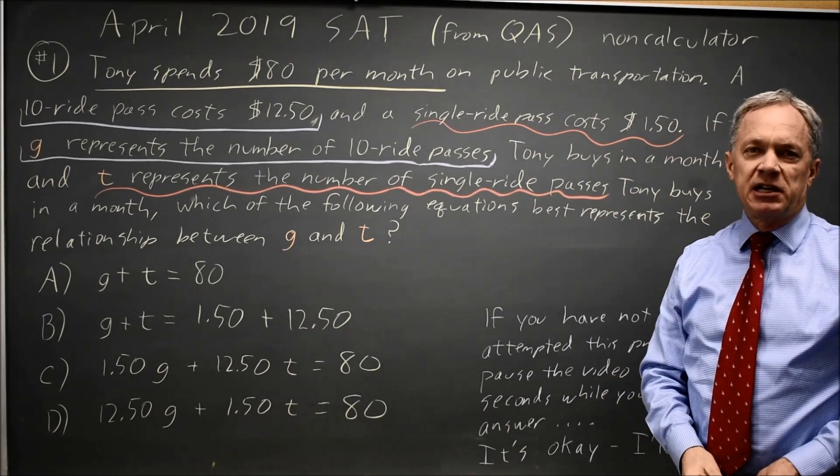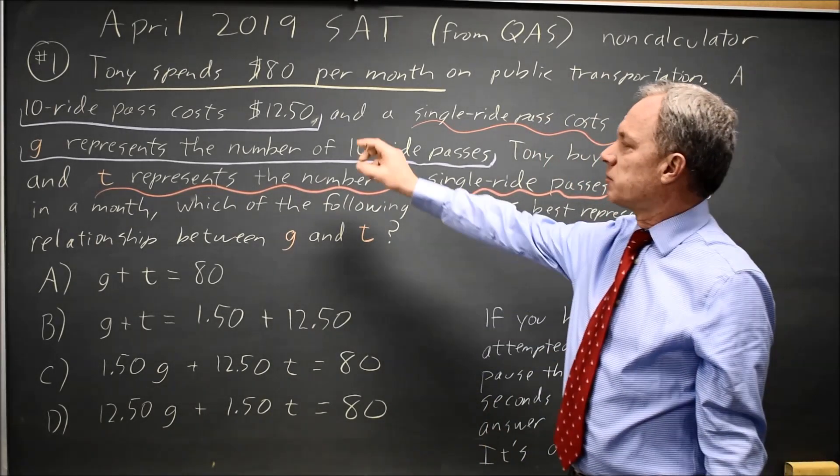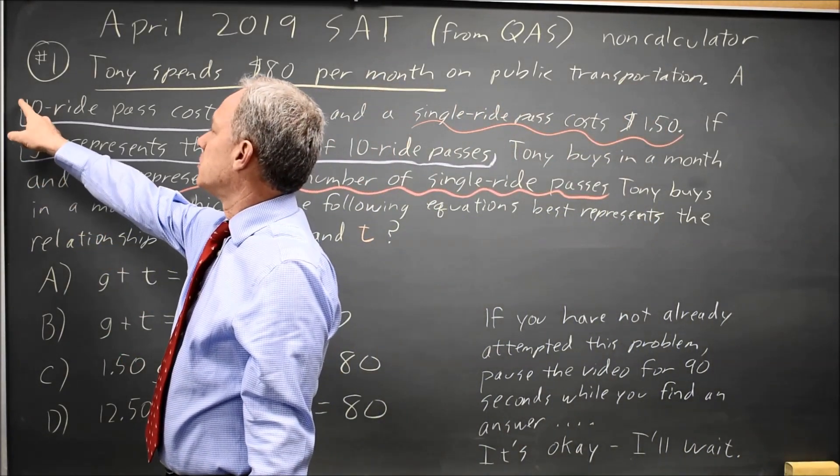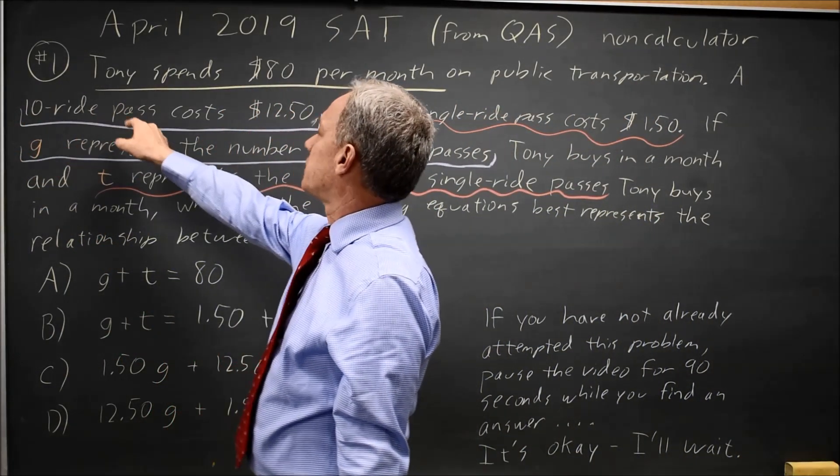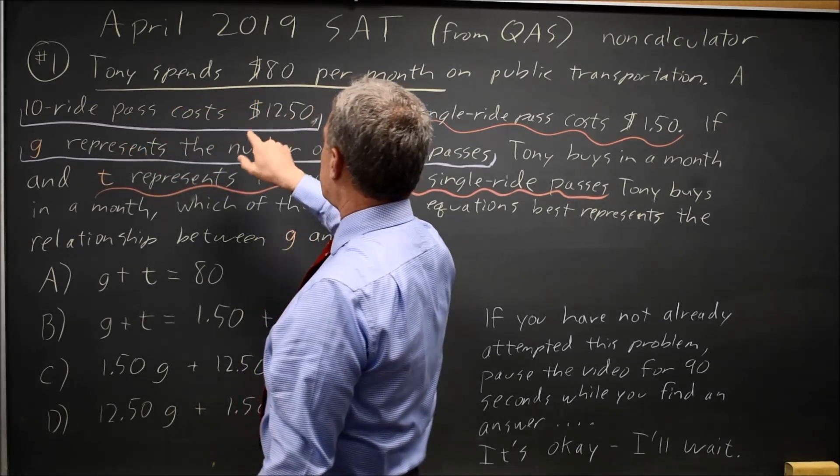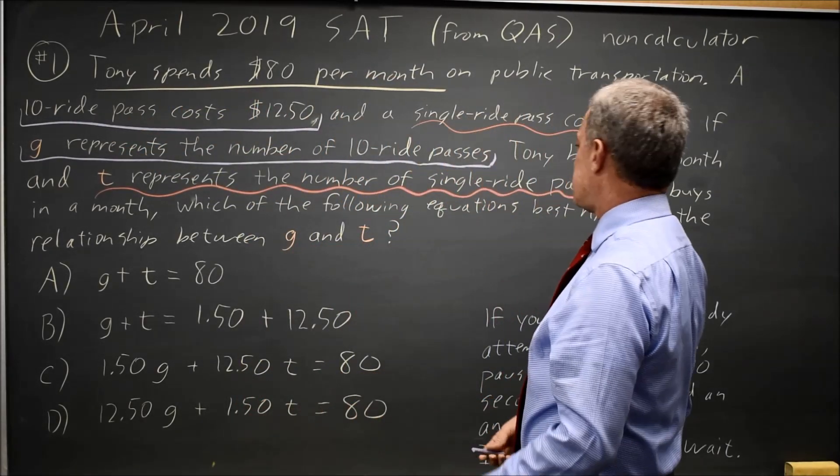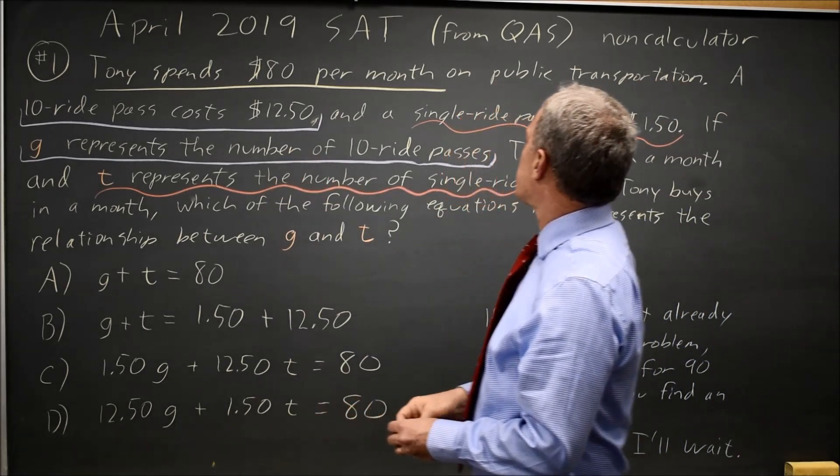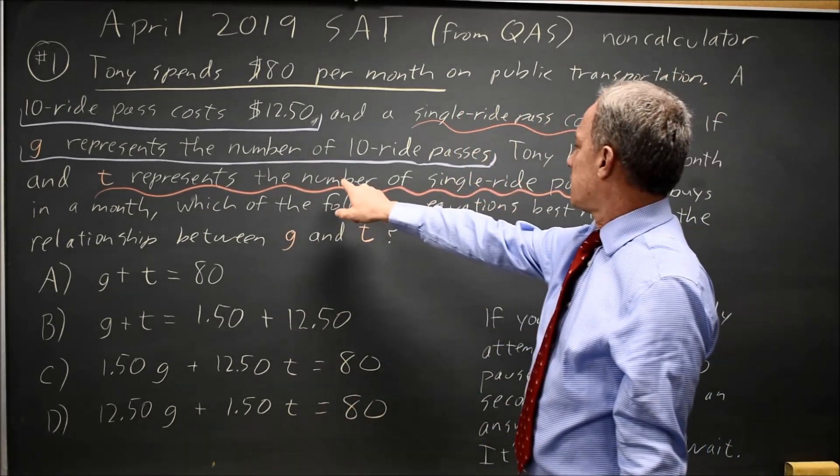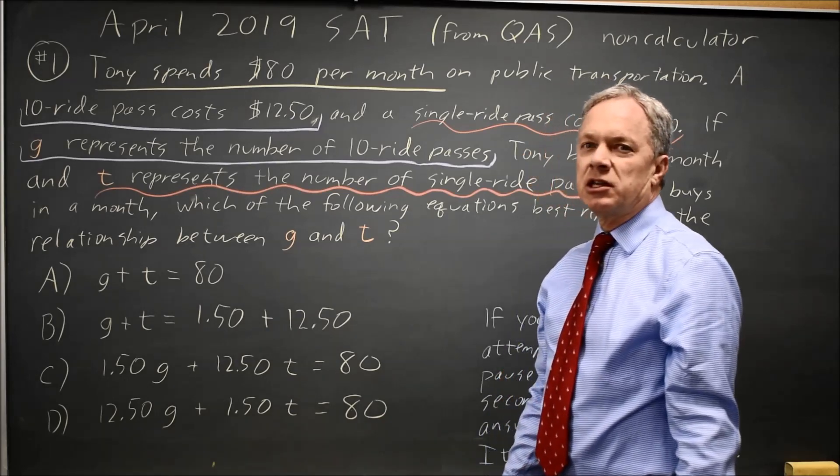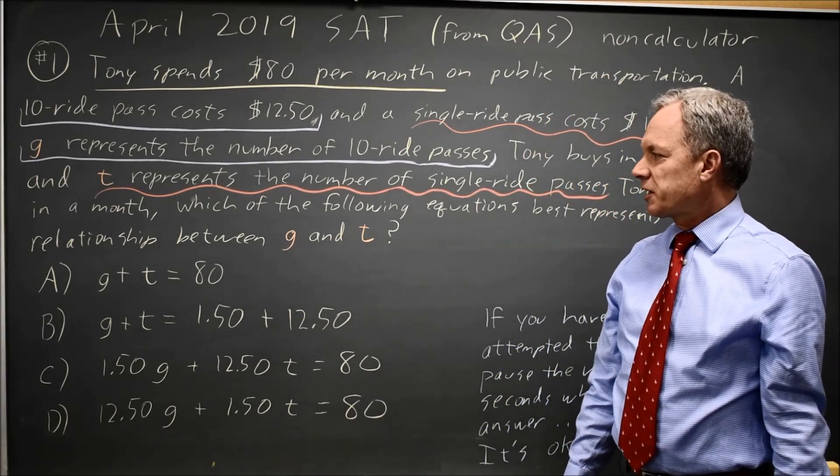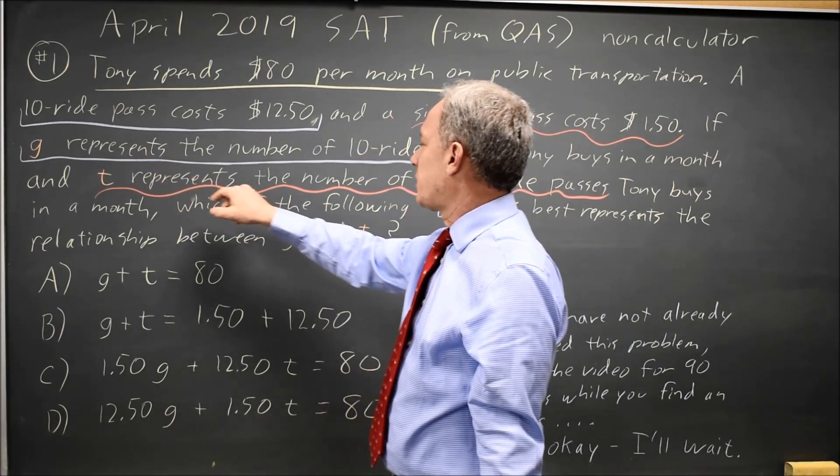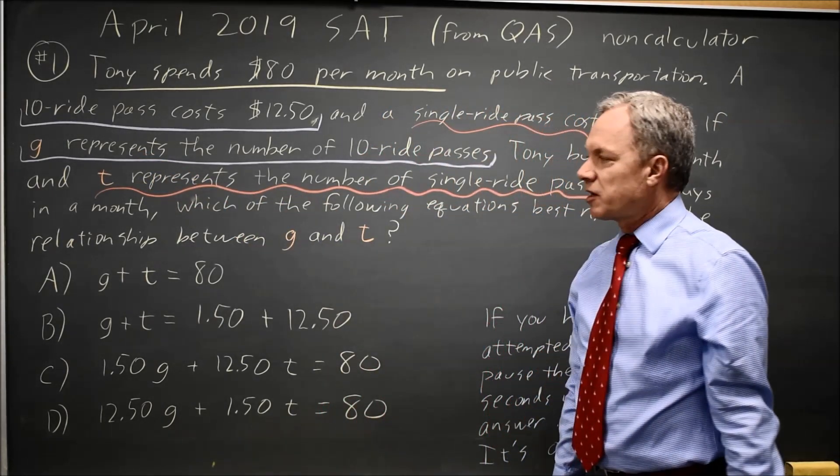If I have a highlighter, I like to highlight relevant points in similar colors. If I don't have a highlighter, I like to underline with different styles where the ones with square corners go together. Ten ride passes and the number of ten ride passes, which is G. And then single ride passes, and T is the number of single ride passes. That helps me to pair up the correct numbers when writing the equation, because it's not obvious why G would be ten ride passes and T would be single ride passes.